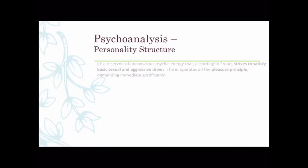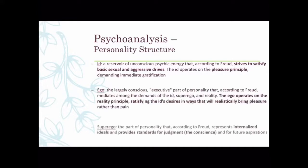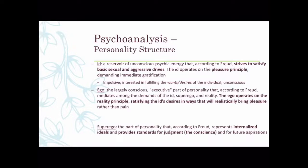Next is Freud's personality structure: the id, ego, and superego. The id is the unconscious psychic energy that strives to satisfy sexual and aggressive drives — 'id' stands for internal desire. It's associated with gratification and pleasure. The id is impulsive; we don't care about consequences, we just want what we want. It's interested in fulfilling the wants and desires of the individual and is fully unconscious according to Freud.